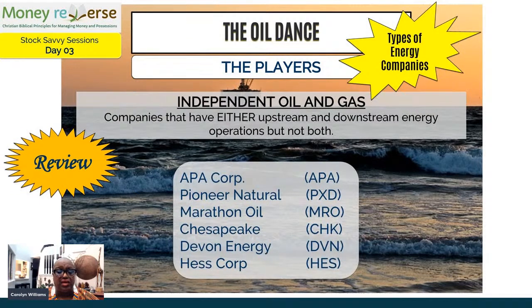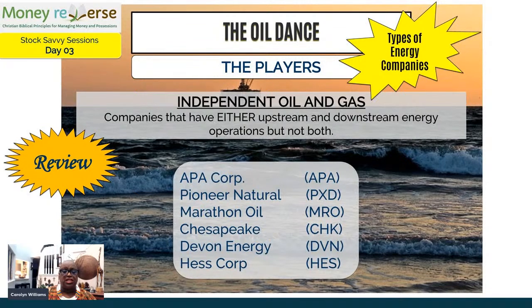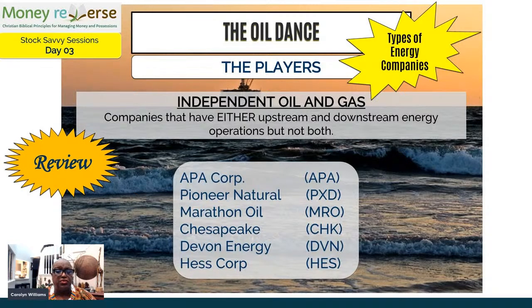Another type of player is the independent. These are companies that have either upstream or downstream, but not both. They're companies we may not have heard of because they're deep in the industry — they may not have gas stations or they have gas stations but no other operations. Marathon Oil is a pure downstream company; Chesapeake Energy is a pure upstream company. So when you start to see oil and gas companies you don't know about, it's okay — the industry is so deep and wide. But now you are more aware; these things are not foreign to you anymore.